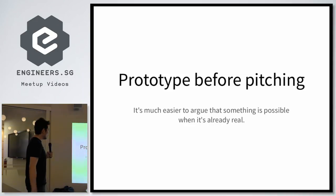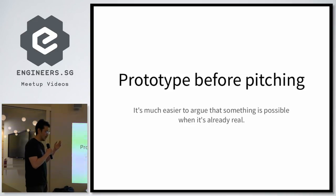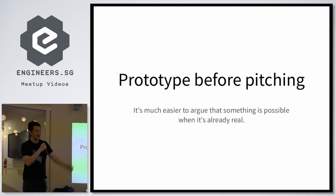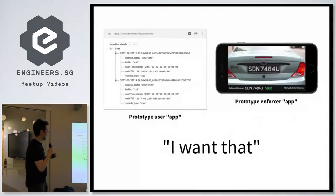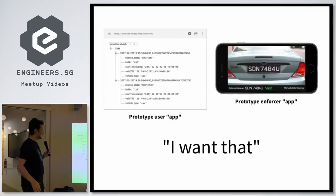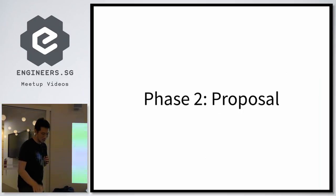We had a minister visit one day. Between his official agenda, we pulled him aside for a few minutes, and Kai Wen, who helped me work on it, we showed him our crappy little app. We said, 'Hey look, you can use a phone to take a picture of a license plate number, isn't that cool?' And he said, 'That is cool, I want that. Why don't you go talk to our agency about it?' And so we did. Which brings us to phase two: the proposal.